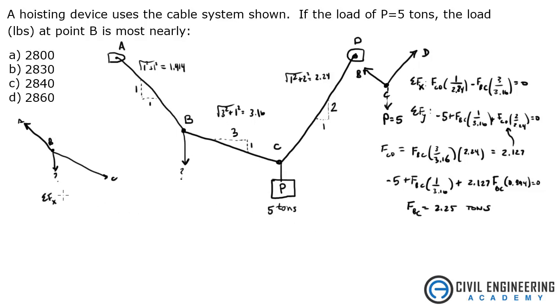So we'll just take some of the forces in the x direction, which is 3 over 3.16. Again, that's the x component divided by the hypotenuse, all times by the 2.25, because we know what force of BC is, we just solve for that. So that's times 2.25 minus 1 over 1.414 times force of AB, and solve for force of AB, and you get 3.02 tons.